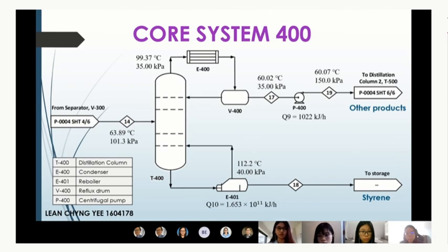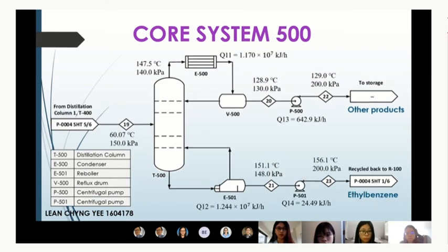The bottom outlet of distillation column 1 must be kept below 125 degrees Celsius, as exceeding this temperature will cause styrene monomer to polymerise and form polystyrene. Core system 500 contains distillation column 2 with two pumps. Its main function is to recycle unreacted ethyl benzene back to reactor 1 to save raw material costs. By-products such as benzene and toluene are stored in a storage tank from the top outlet of distillation column 2.